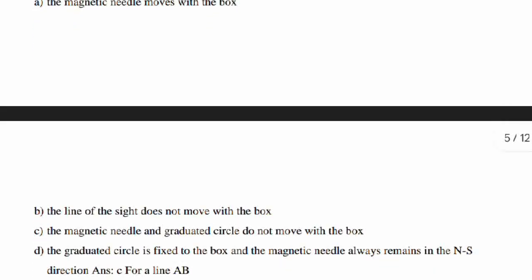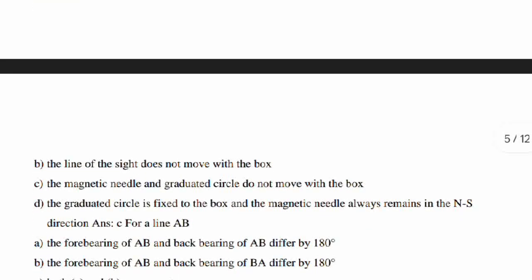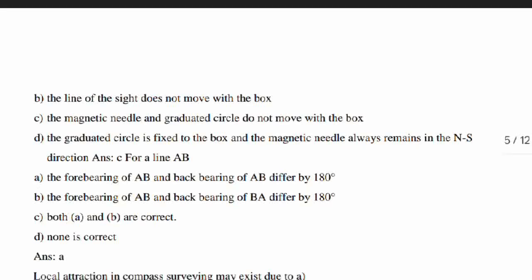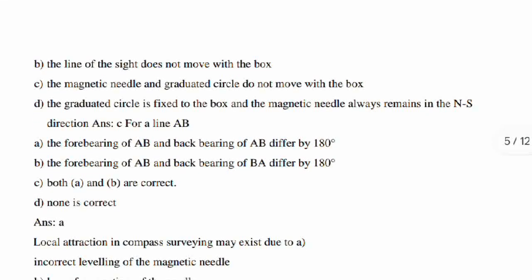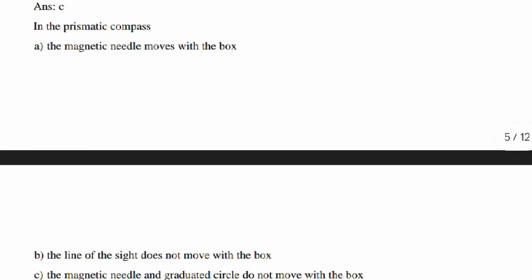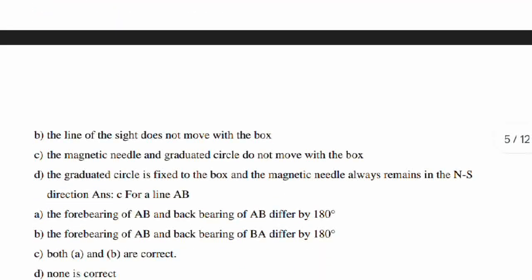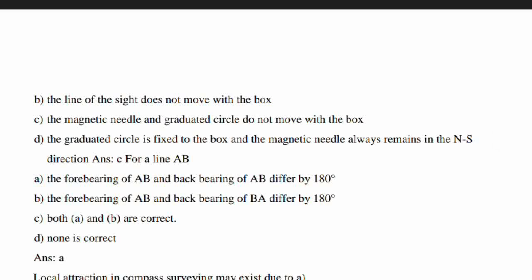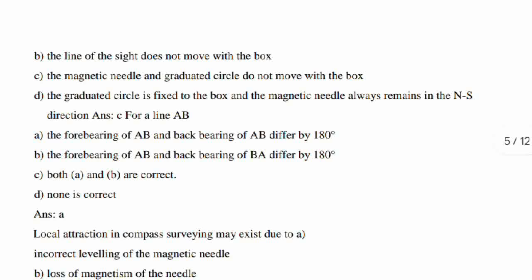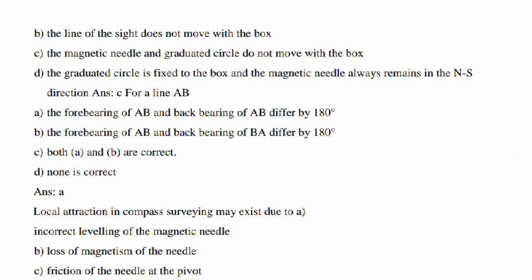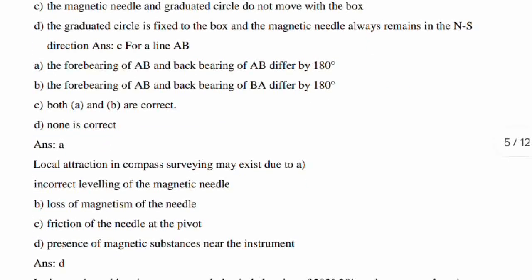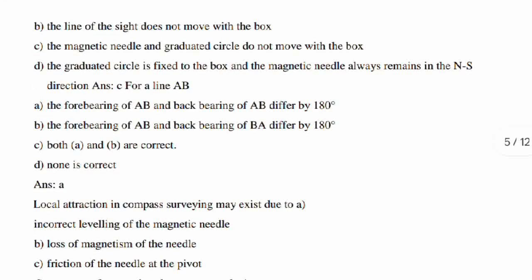In the prismatic compass, the magnetic needles move with the box. The line of the sight does not move with the box. The magnetic needle and graduated circle do not move with the box. Here the answer is, the fore bearing of AB and back bearing of AB differ by 180 degrees. That is the answer. Option A is the right answer.